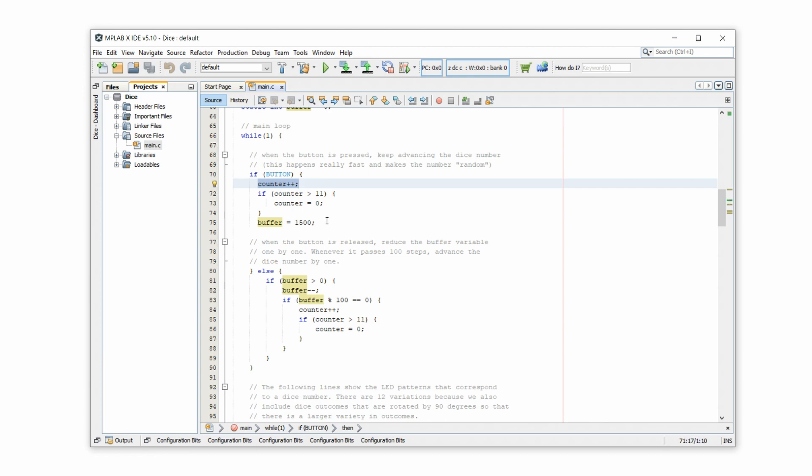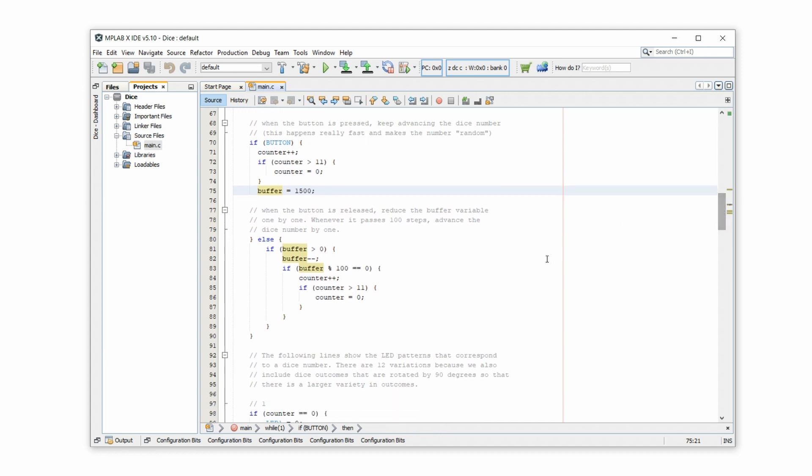These lines here react to the push button press. If the button is pressed, the counter is increased, and if it is above 12, it gets reset. Why 12 and not 6? I'll explain that in just a second. This part here becomes active when the push button is released, and all it does is slow down the dice roll for about half a second. This is just so that the dice doesn't stop too abruptly and it looks a bit nicer.